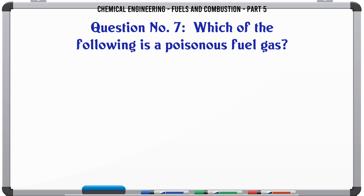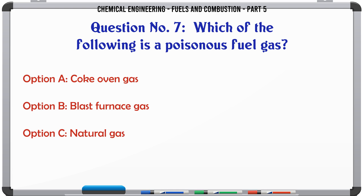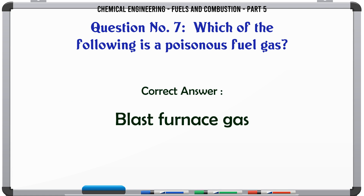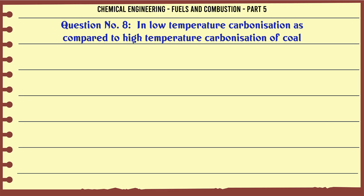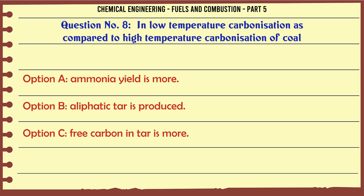Which of the following is a poisonous fuel gas? A. Coke oven gas. B. Blast furnace gas. C. Natural gas. D. None of these. The correct answer is blast furnace gas.